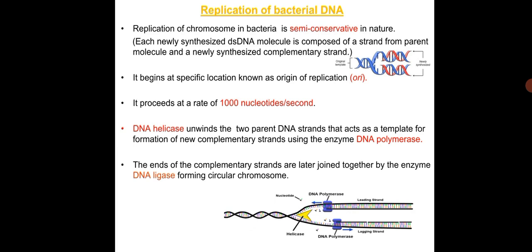The process is coordinated by two key enzymes: DNA helicase and DNA polymerase. DNA helicase unwinds the two parent DNA strands of the double helix; both strands act as a template for synthesis of new complementary strands using DNA polymerase. The ends of newly synthesized complementary strands are then joined together by DNA ligase, forming circular chromosomes.